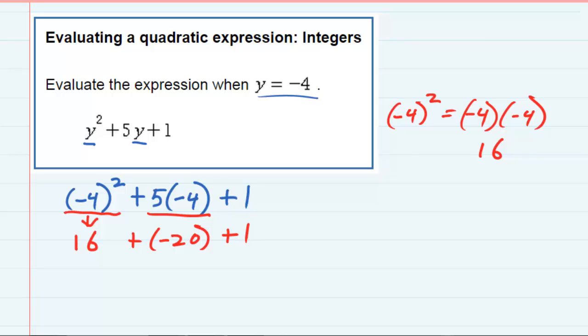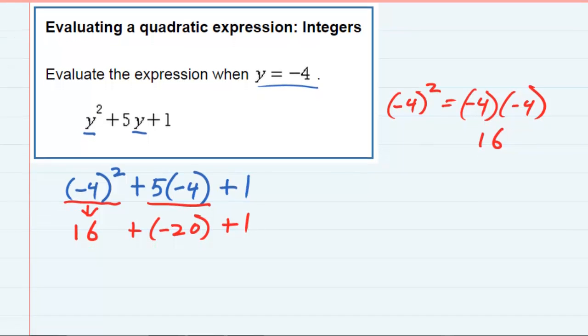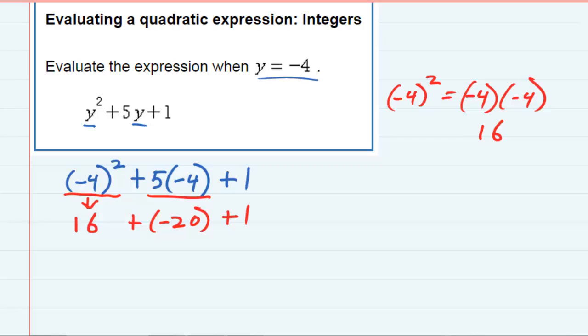So last, I just need to add and subtract these terms. The first two, positive 16 plus a negative 20. When the signs are different, we're supposed to subtract and keep the sign of the larger. So if I subtract, I get 4, keep the sign of the larger, makes that a negative 4. And then still bringing down that plus 1.